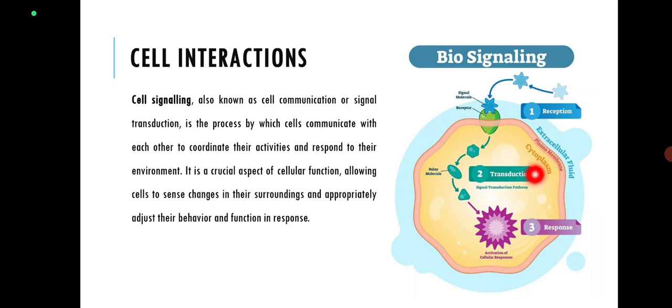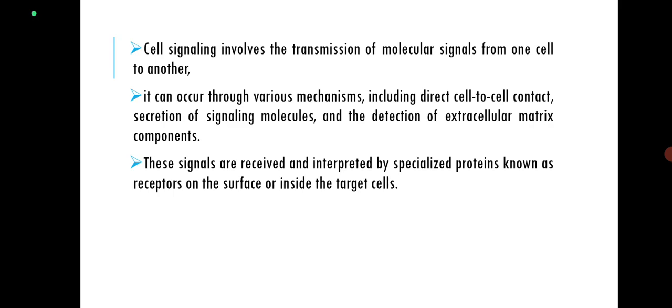Cell signaling involves the transmission of molecular signals from one cell to another. It can occur through various mechanisms, including direct cell-to-cell contact, secretion of signaling molecules, and the detection of extracellular matrix components.